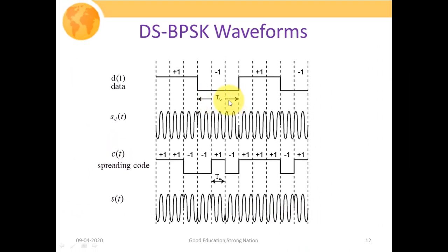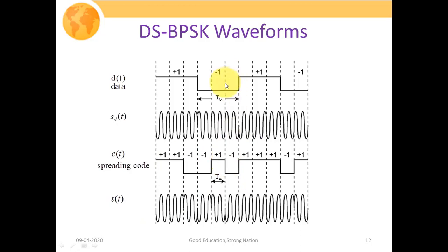In a single bit duration we have 3 chip values, meaning each bit is represented by 3 chip sequences. The spread signal S_D(t) can be produced in two equivalent ways: first generate the BPSK signal and then multiply by C(t), or first multiply D(t) by C(t) and then multiply by the carrier. Both yield the same output since these are linear operations.